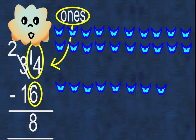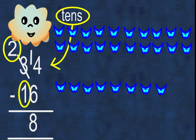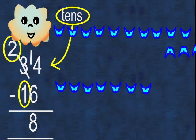Now looking at the tens column, we have two lots of 10 take away one lot of 10, which leaves one 10 behind. Our final answer is 18.